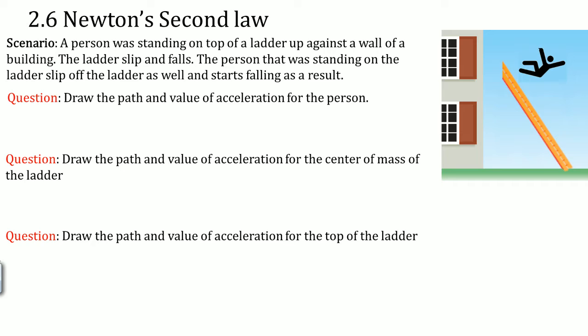Here's the question. I would like you to draw the path and the value of acceleration for that person. Here's the answer. That person, that dot represents the center of mass, it goes down and the person is falling due to the force of gravity. So the person is falling under free fall.